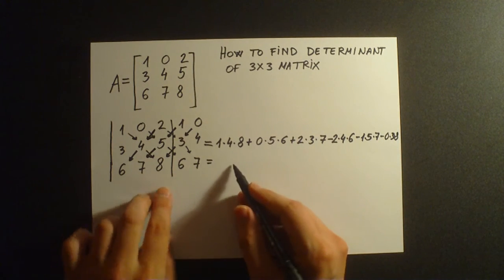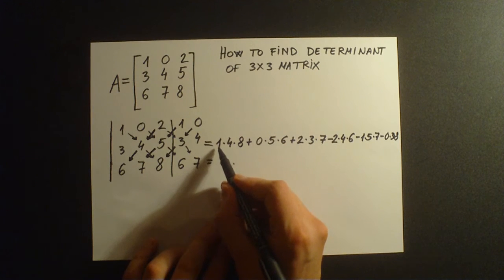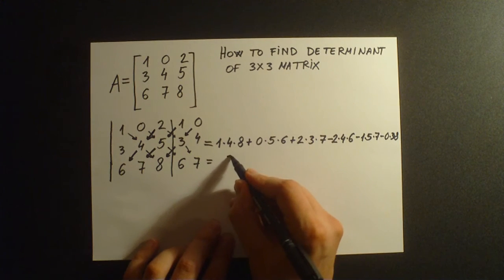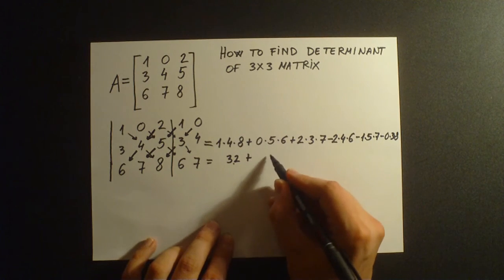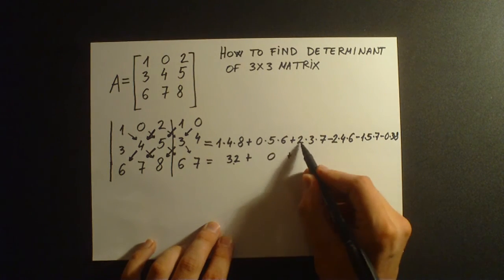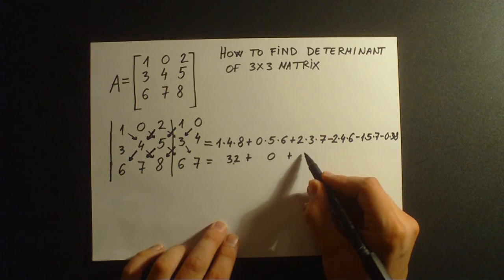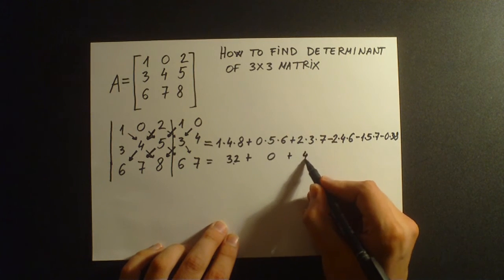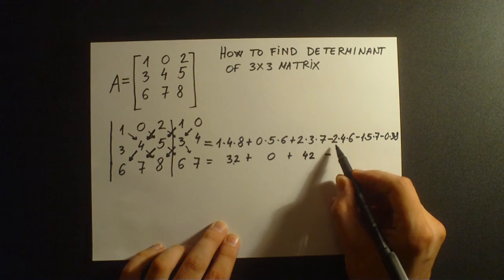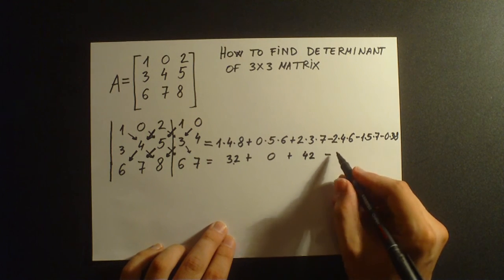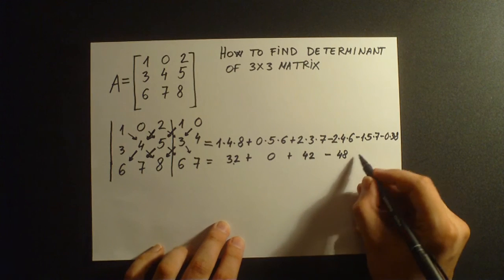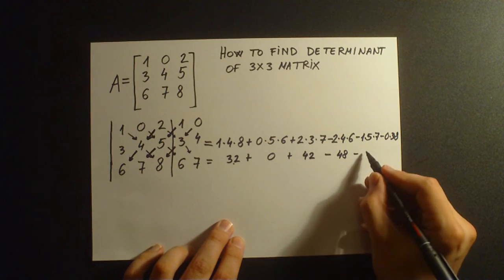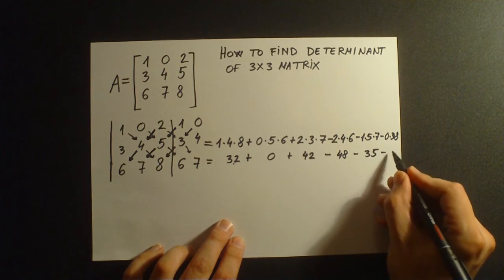So what we have here: 1 times 4 times 8 is 32, plus 0 times 5 times 6 is 0, plus 2 times 3 times 7 is 42, minus 2 times 4 times 6 is 48, minus 35, and minus 0.